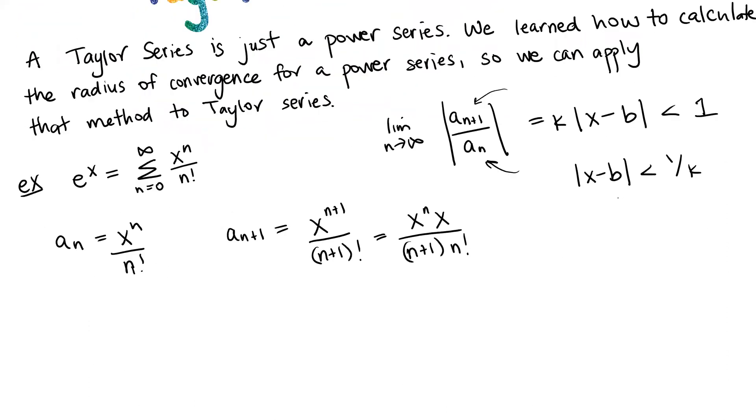Okay, so let's go ahead and look at the limit as n goes to infinity of |a_(n+1) over a_n|. So our numerator is x to the n times x over (n+1) times n factorial, and then a_n is x to the n over n factorial, so next thing we're going to write down is n factorial divided by x to the n.